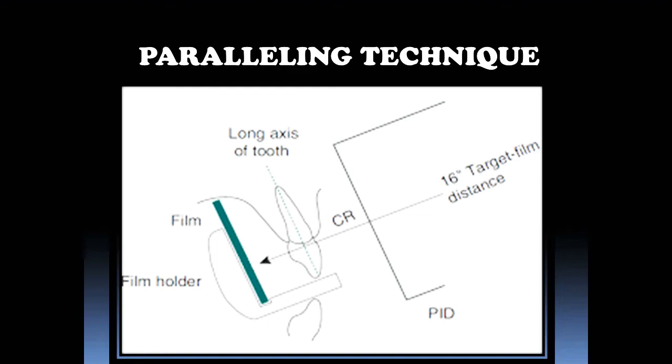Now, first of all, I will be explaining the parts of this image. Here, this is the tooth of interest. This dotted line is the long axis of the tooth. This receptor is the x-ray film receptor. This is the film holder. This is the biting plane of the film holder onto which the patient bites. This is the source, and this is the central ray which is directed towards the tooth of interest and the film.